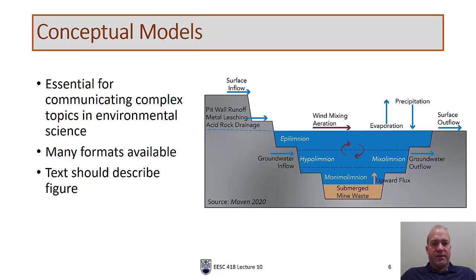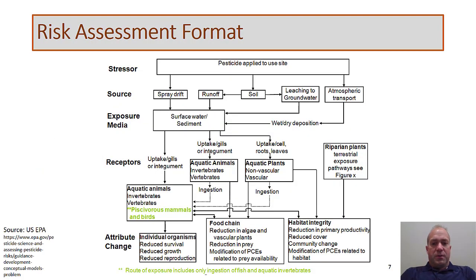I'm going to spend some time on conceptual models. Conceptual models come in many different forms and are typically used to show complex processes or mechanisms, of which there are many in environmental science. Keep in mind that even if you have a really good conceptual model figure, you still need to explain it well in your text — the text and the figure need to go hand in hand. I'll start with the classic risk assessment model from the US EPA: we start with a stressor such as a pesticide, which goes through different sources and exposure media, then to receptors — living things — with changes in survival, growth, reproduction, or food chain effects.